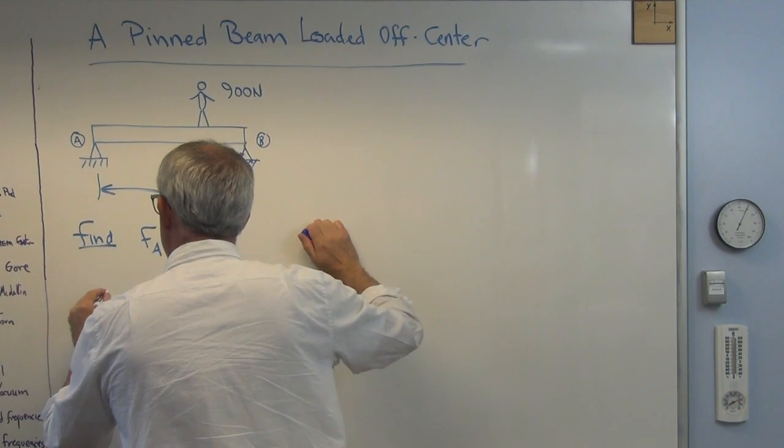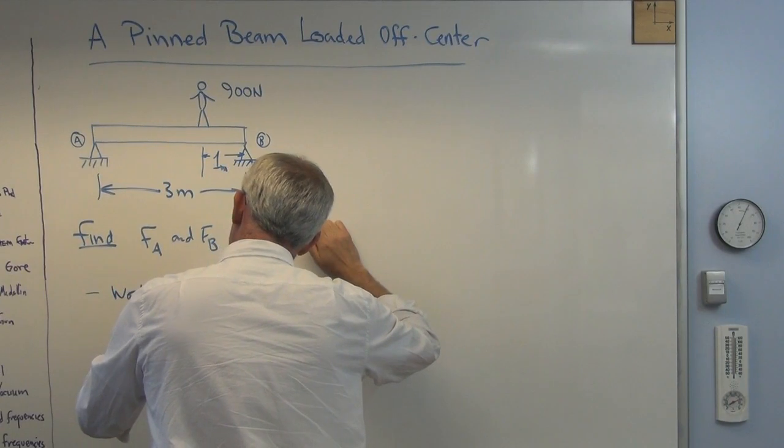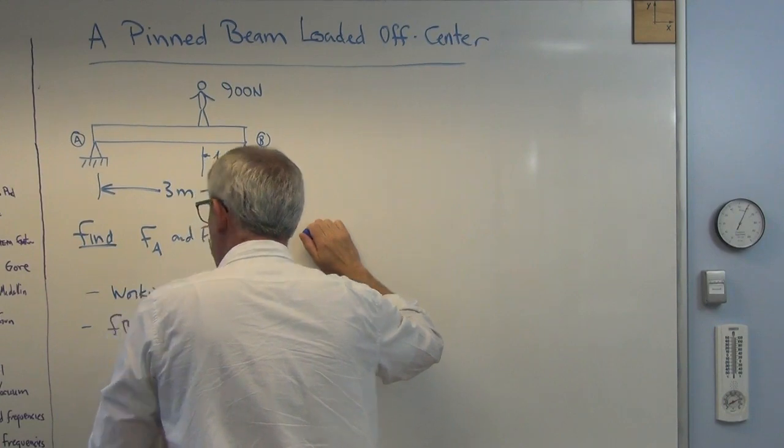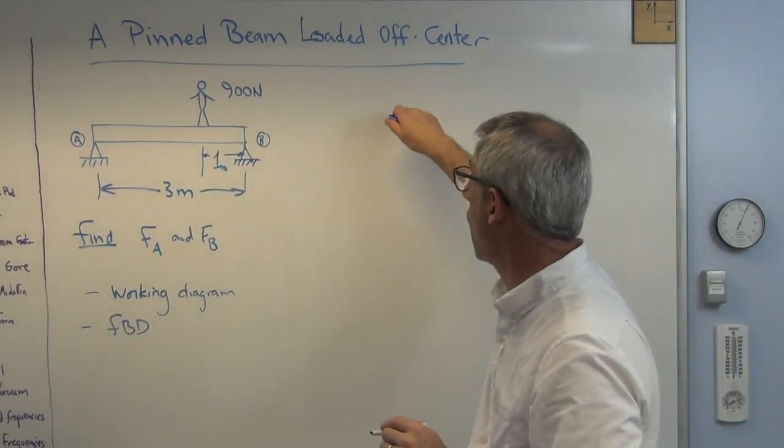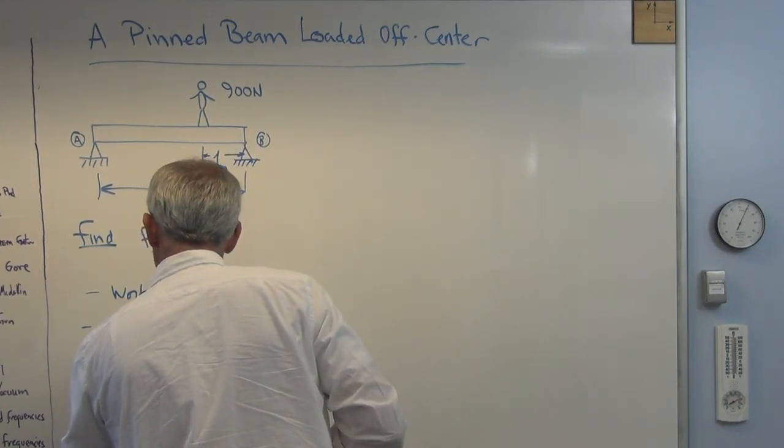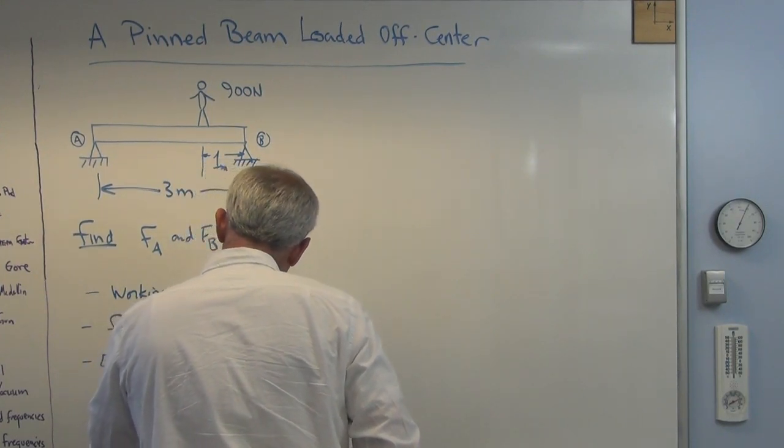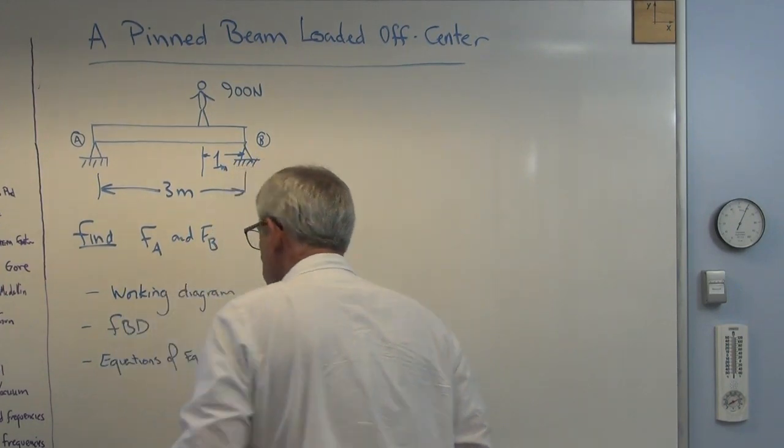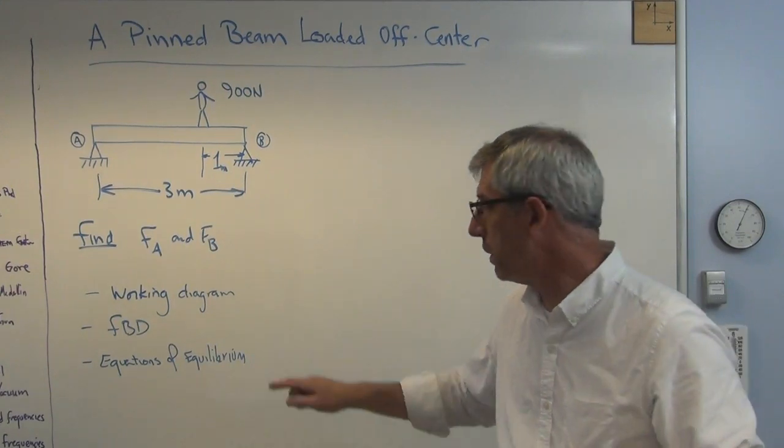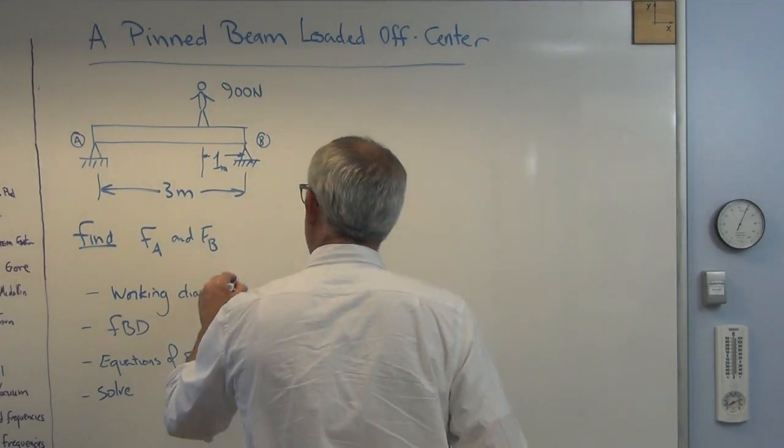So what we're going to do is we're going to draw a working diagram, which we just did. Next, then we're going to draw a free body diagram, which I'm going to do up here. We're going to write out the equations of equilibrium. That's kind of a 50-cent way of saying sum of the forces equals zero, sum of the moments equals zero. That's really what this means. And the last one is that we're going to solve those equations to find something we need.